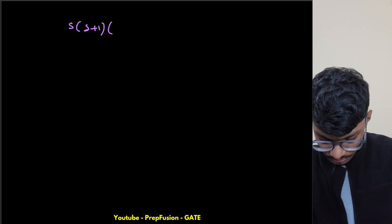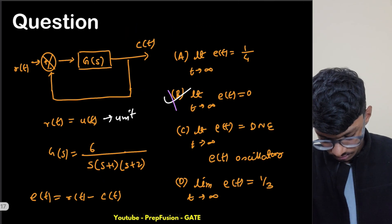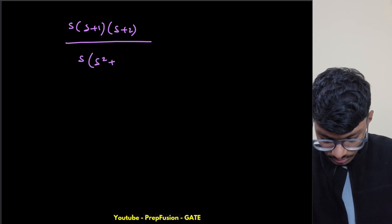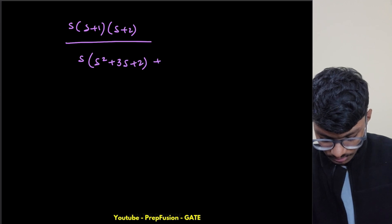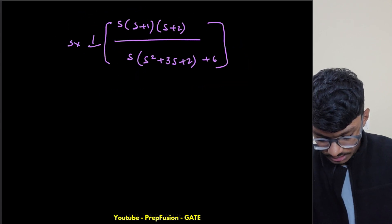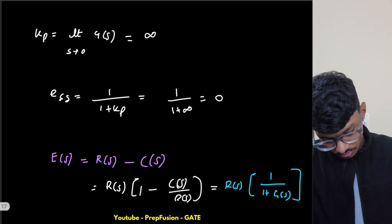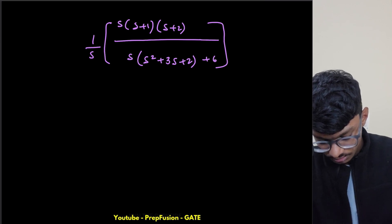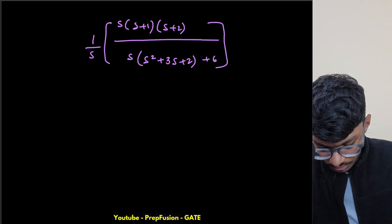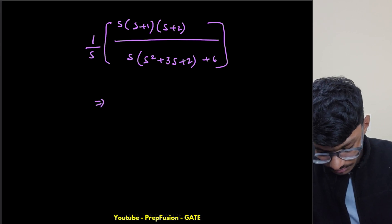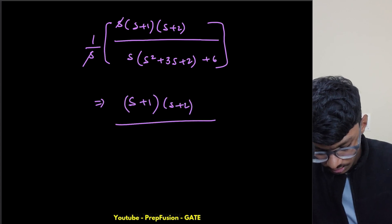C(s) will be s(s+1)(s+2) divided by s(s+1)(s+2) + 6. I will multiply this: s(s² + 3s + 2) + 6. And the outside I have s. R(s) is 1/s. So here, if I see that, this s will get cancelled. So this will be (s+1)(s+2) divided by s³ + 3s² + 2s + 6.